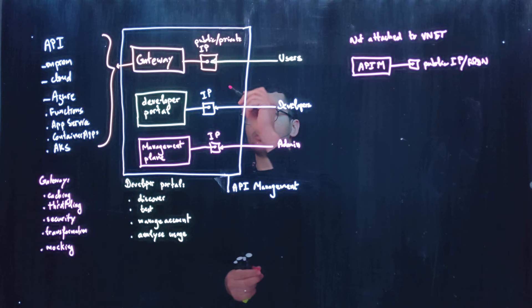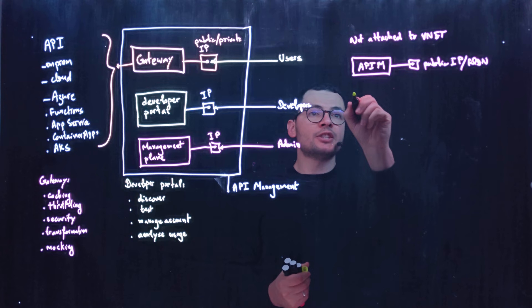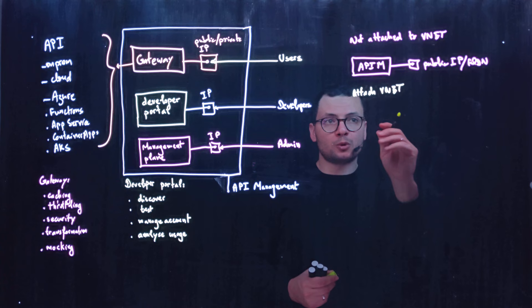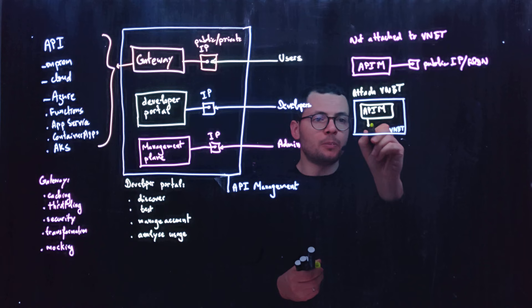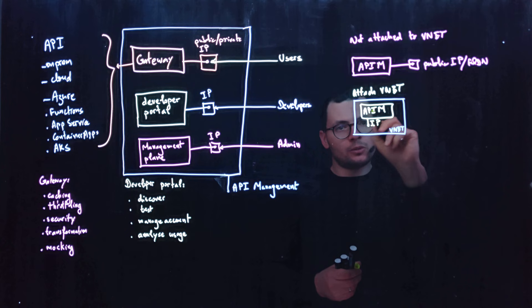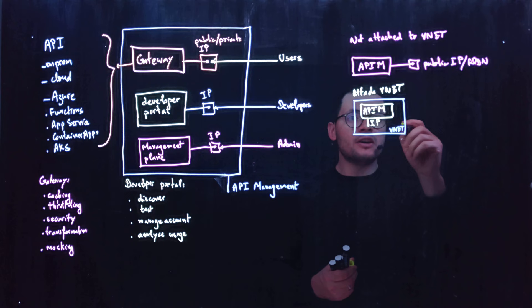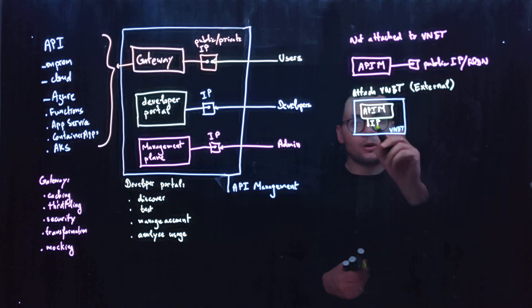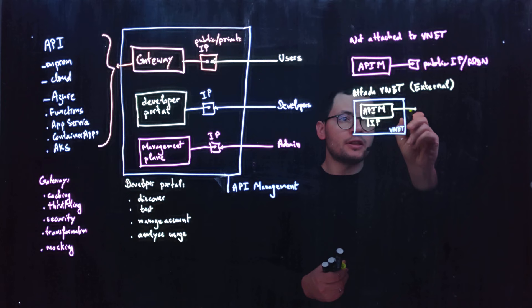The second option is to attach the API management to a virtual network, meaning it will be injected into an Azure virtual network. It would have a private IP address within the virtual network, reachable by services deployed within that network. When attaching to a virtual network, you have two sub-options. The first is the external mode, where the API management would have a private IP but would also have a public IP address that exposes the API management.